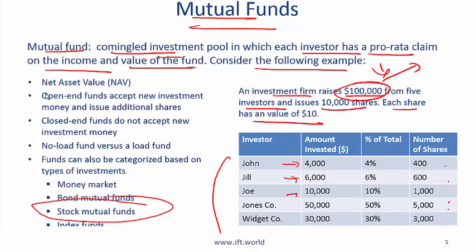Some key terms in the context of mutual funds: Net Asset Value (NAV) is extremely important. For a given fund, you add up the value of all the assets and subtract the liabilities to get the net asset value. NAVPS means NAV per share — you find the total net asset value and divide by the number of shares.